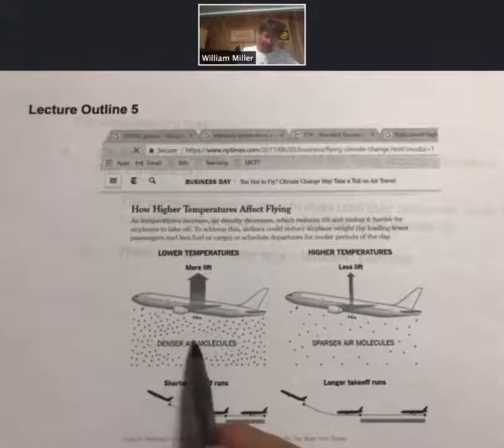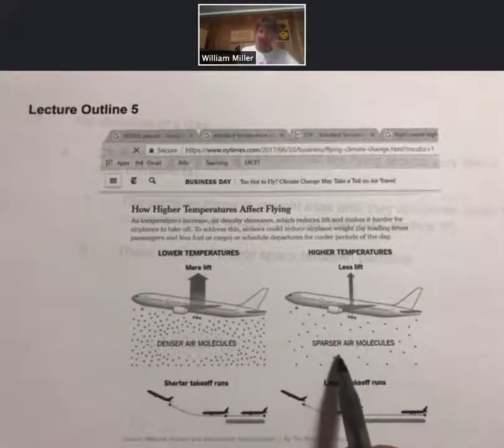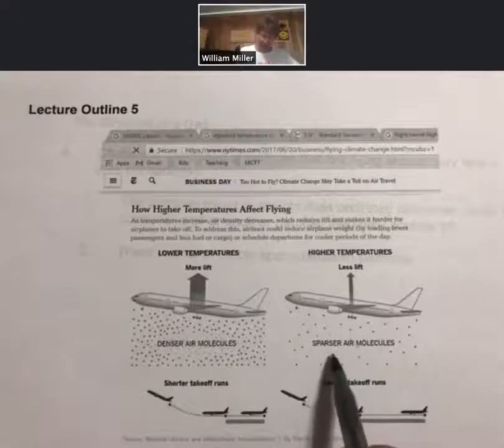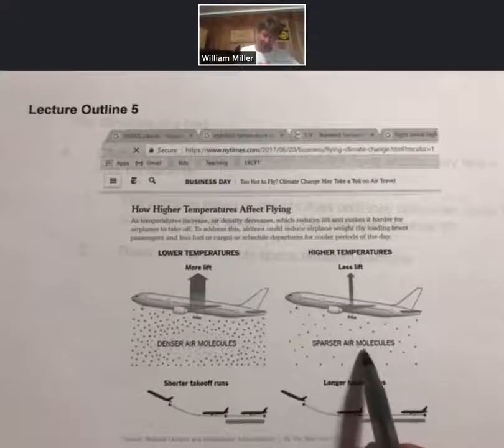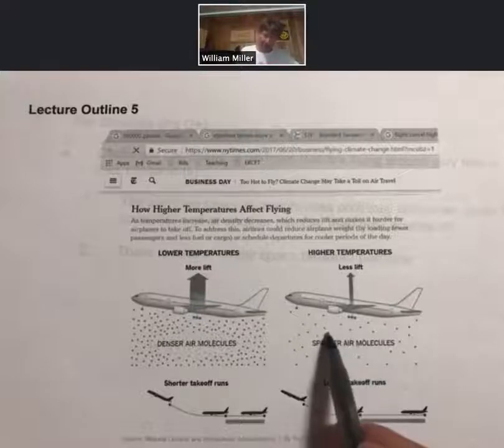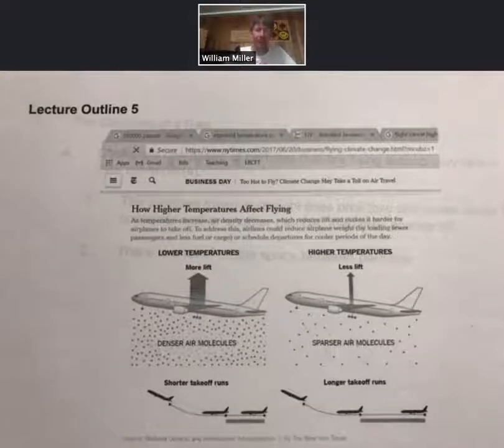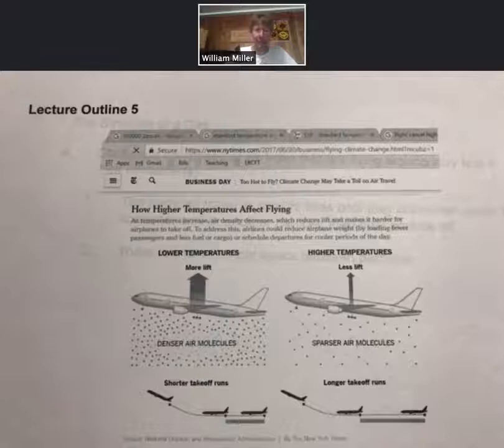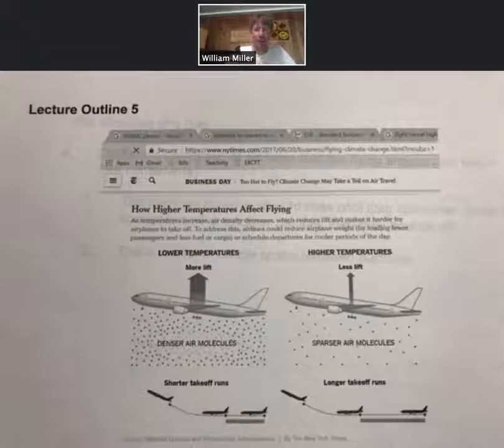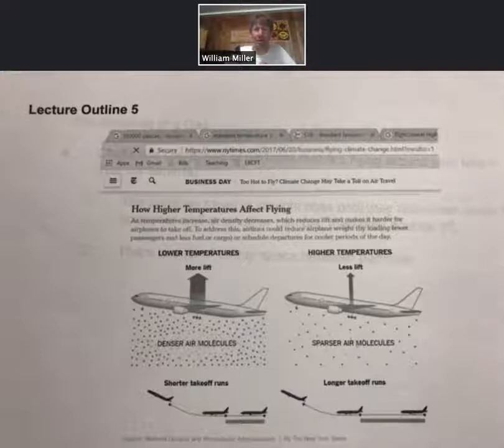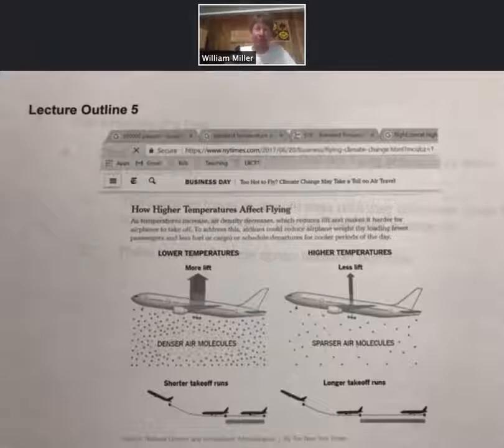As temperature increases, there's a sparser set of air molecules in the gas phase, meaning gas molecules are farther apart. This leads to less lift for the airplane, which means the plane has to be going faster. In some circumstances, in Arizona the temperature had gotten to about 125 degrees Fahrenheit, and that is high enough that certain planes are not allowed to take off.